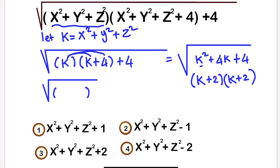We have k plus two squared. So the square root and the square cancel each other, and we are left with k plus two.